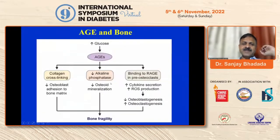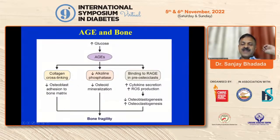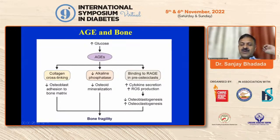Hyperglycemia harms bone through several mechanisms. When blood glucose is uncontrolled, there is deposition of advanced glycation end products (AGE). AGE deposits in bone cause collagen cross-linking, culminating in decreased osteoblast addition to the bone matrix. There is a decline in alkaline phosphatase, leading to decreased osteoid mineralization. Binding of AGE to pre-osteoclast receptors increases osteoclast action and osteoclastogenesis — cells responsible for bone resorption — while decreasing osteoblastogenesis, increasing bone fragility.